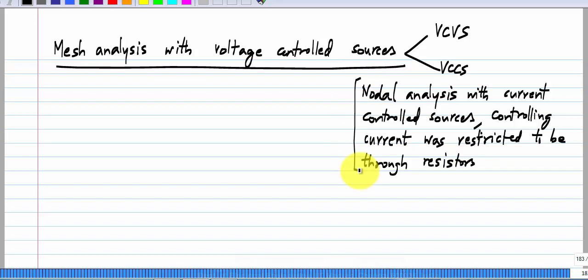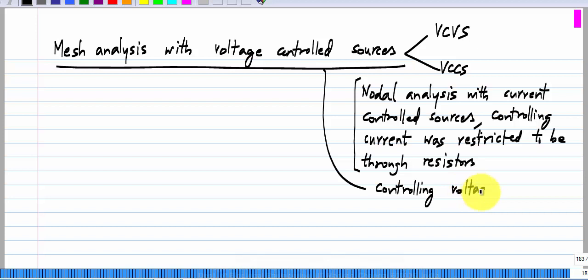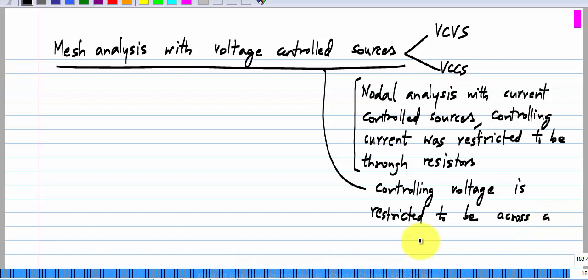Similarly, in this case when we have mesh analysis with voltage-controlled sources, the controlling voltage is restricted to be across a resistor. I will emphasize again: it is not that when the controlling voltage is elsewhere — let us say across a current source — you cannot analyze the circuit. You definitely can.